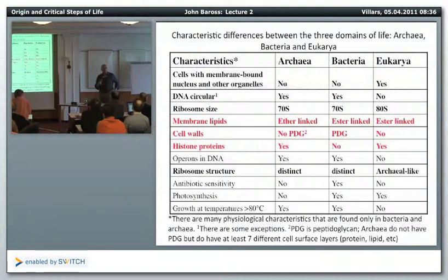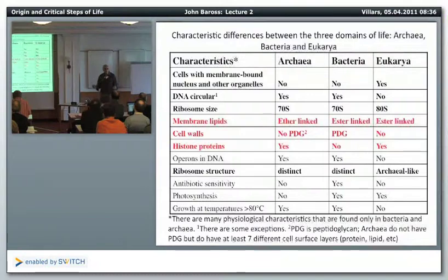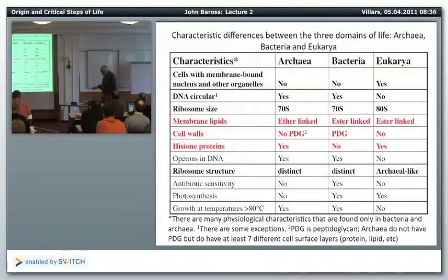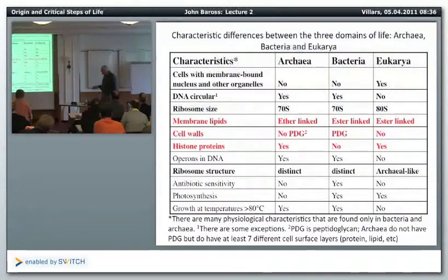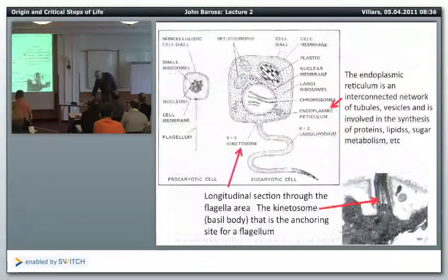One really interesting fact: even though archaea are fairly prevalent and most of us have archaea in our gut, there are no known human pathogens that are archaea. That's a good thing, because they have not only a different cell wall but a different structure, and they're resistant to all antibiotics. Organisms that grow above 80 degrees are found only among archaea and bacteria, not in eukaryotes.